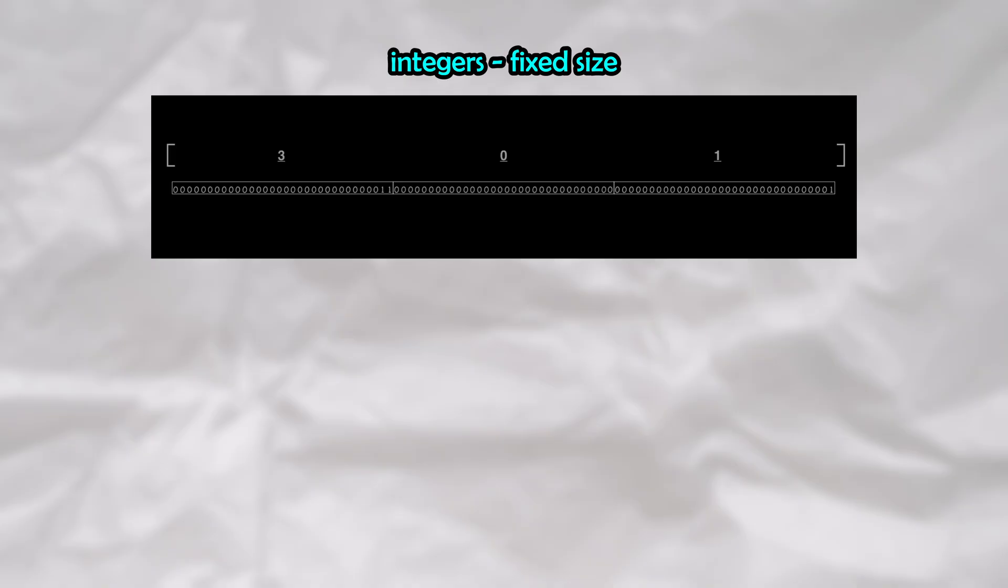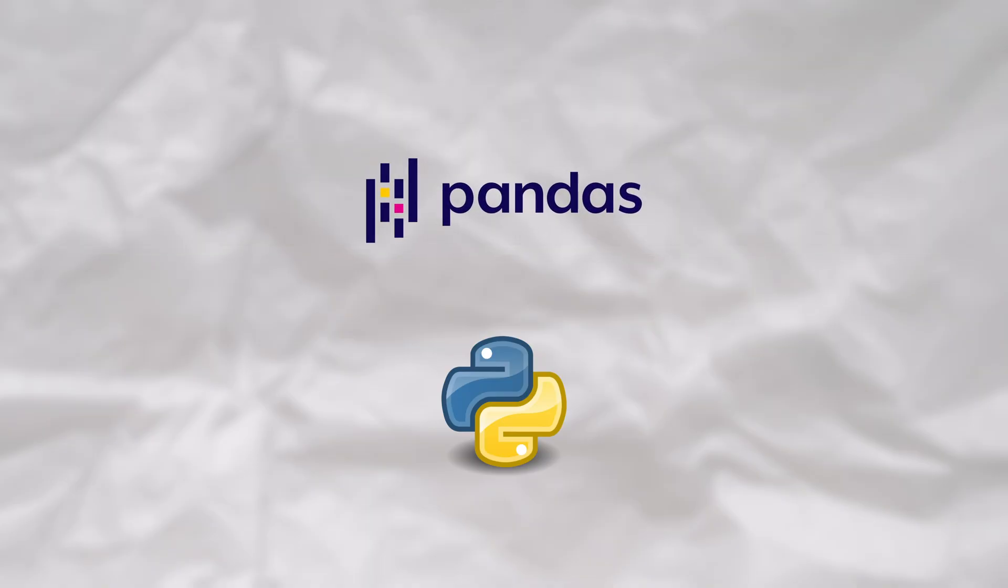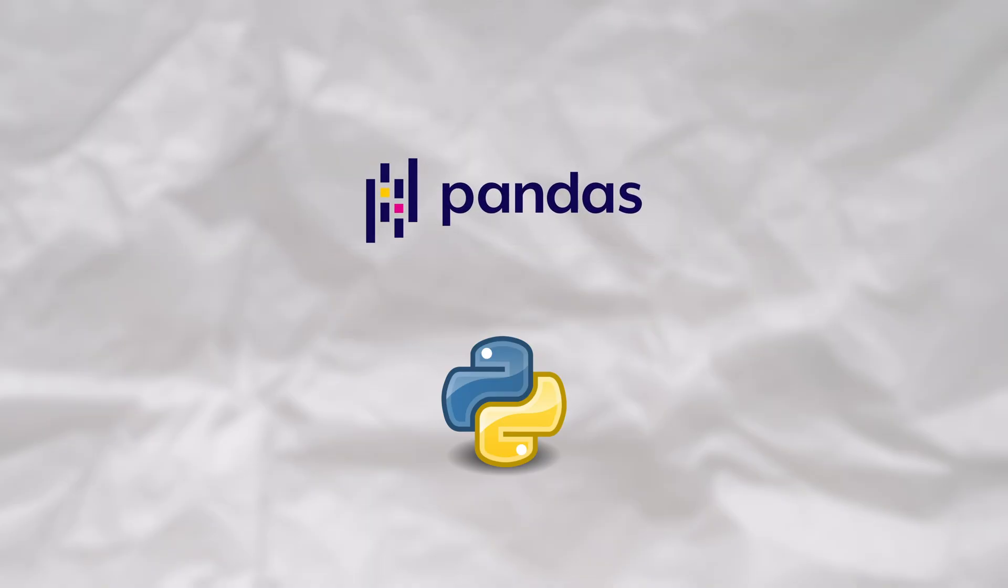Let's take a look at the first example using integers. The key here is that these are fixed size memory blocks. Vanilla Python actually works a little differently, since it uses unbounded integers, meaning that they don't have a fixed size. For this example, let's assume that this is a pandas series instead, just for the sake of this example.